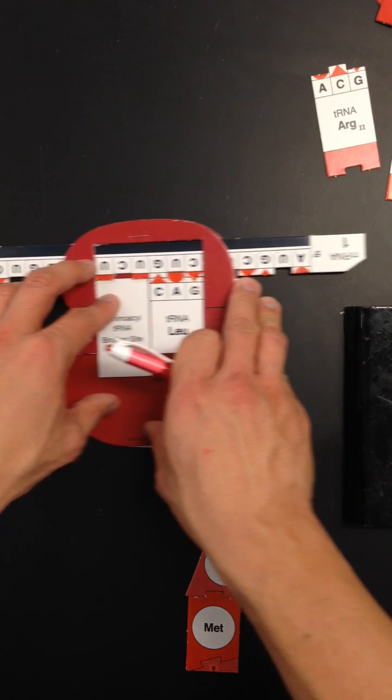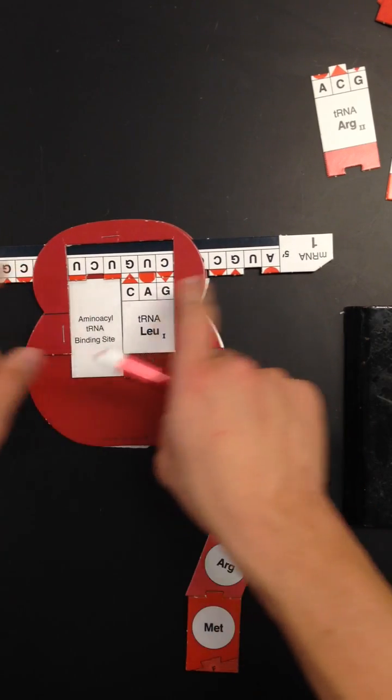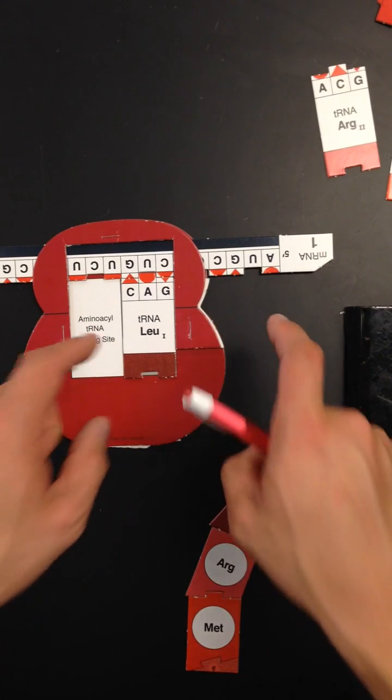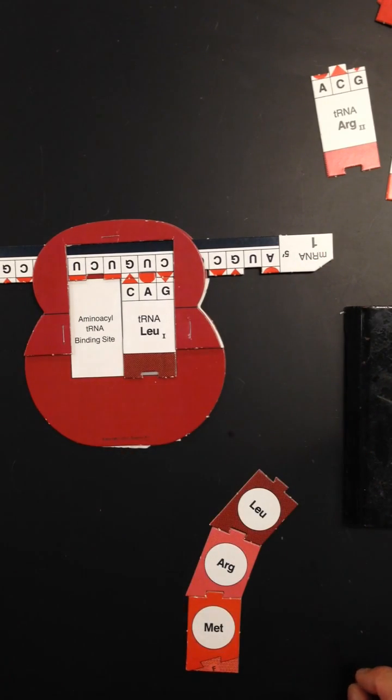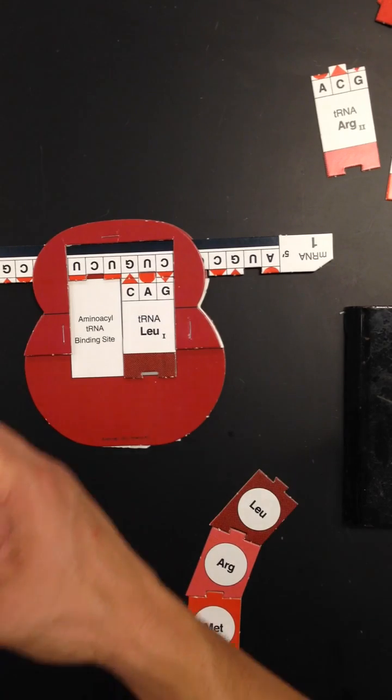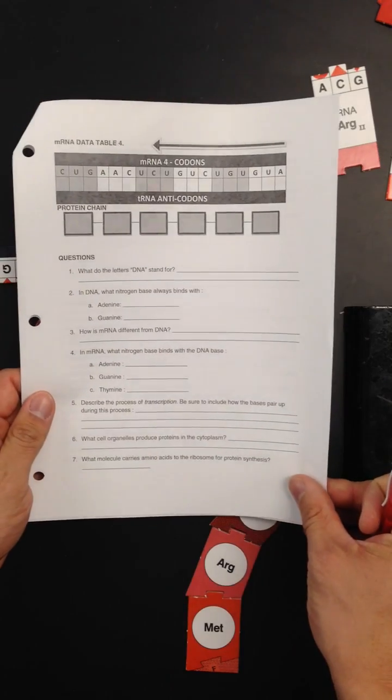Once you finish messenger RNA strand 1, then you're going to do messenger RNA strand 2, and then messenger RNA strand 3 after that, and then strand 4 after that. Once you've decoded or translated all of your messenger RNAs into proteins, don't forget to answer the questions at the end of your lab.